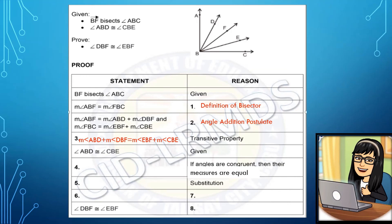Since angle ABD is congruent to angle CBE — reason: given — we can say that measure angle ABD equals measure angle CBE, reason: definition of congruent angles. Since they have equal measure, we can substitute measure angle ABD for measure angle CBE, giving us: measure angle ABD plus measure angle DBF equals measure angle EBF plus measure angle ABD — reason: substitution property, because we replaced measure angle CBE with measure angle ABD.